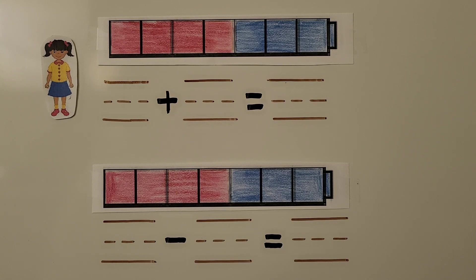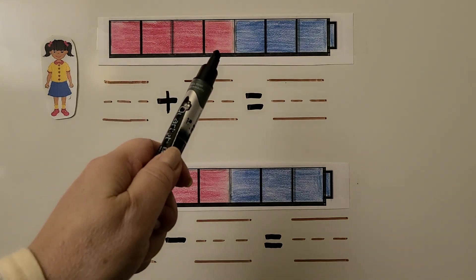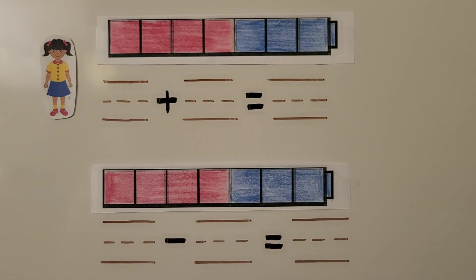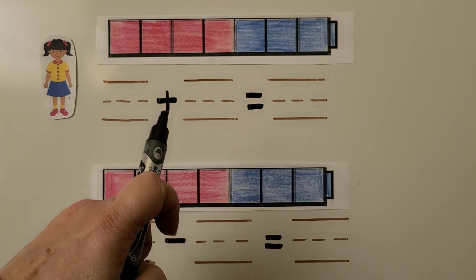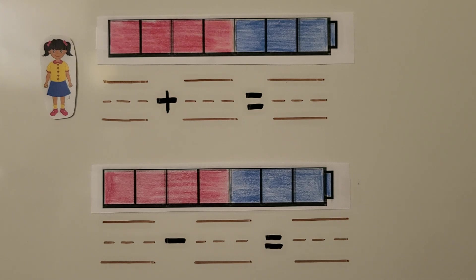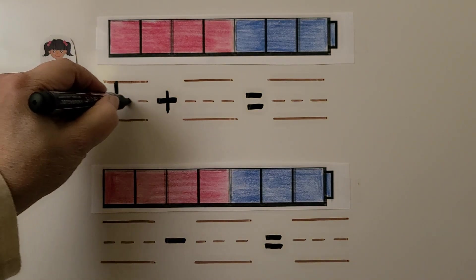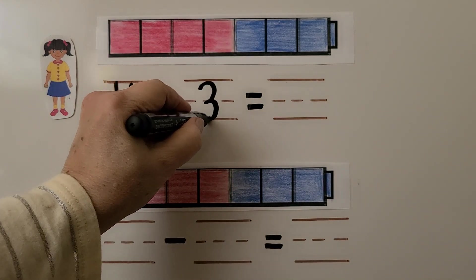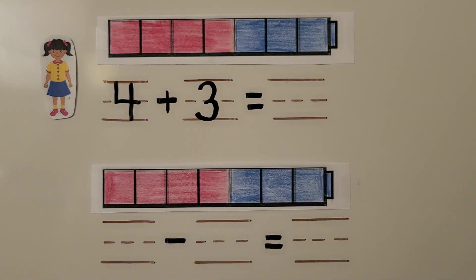Tala has four red cubes — one, two, three, four. She finds three blue cubes. How many cubes does she have in all? We can write an addition sentence to show the number of cubes in the red set and the number of cubes in the blue set with a plus symbol and an is-equal-to symbol. She has four red — we write the four. She has three blue. We can count all the cubes to know what four plus three is equal to.